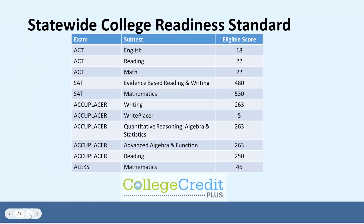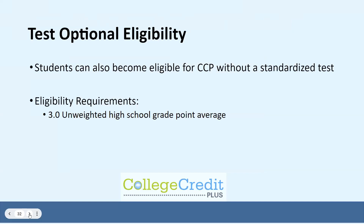The statewide college readiness test scores are one way to meet CCP student eligibility guidelines. You can view this chart to see if your test scores meet the standard. Students can also become eligible by meeting the test optional admission criteria. Students who have earned a 3.0 unweighted high school GPA will be eligible for CCP. Students without the 3.0 may be eligible and should reach out to the college of their choice for more information.